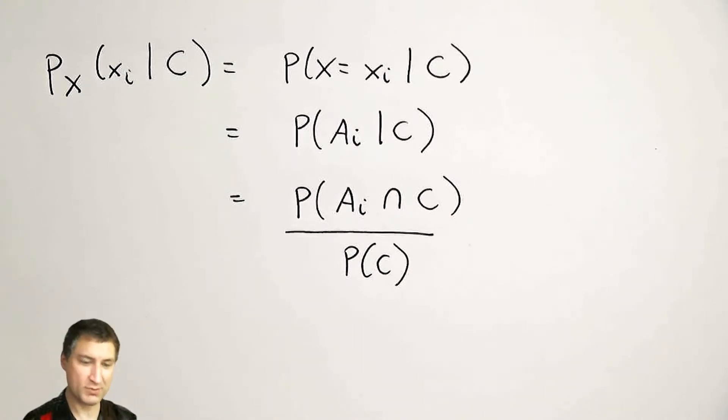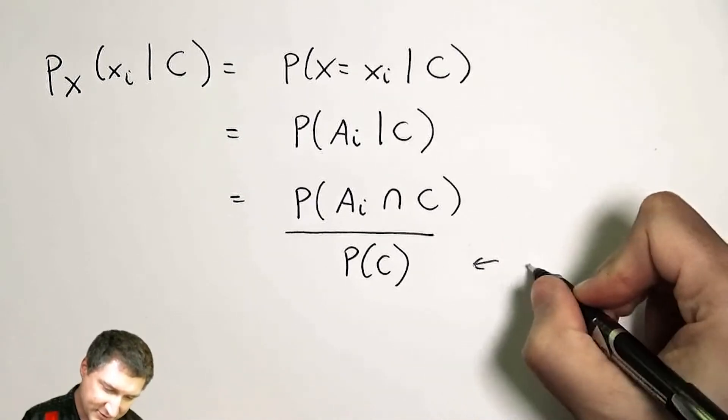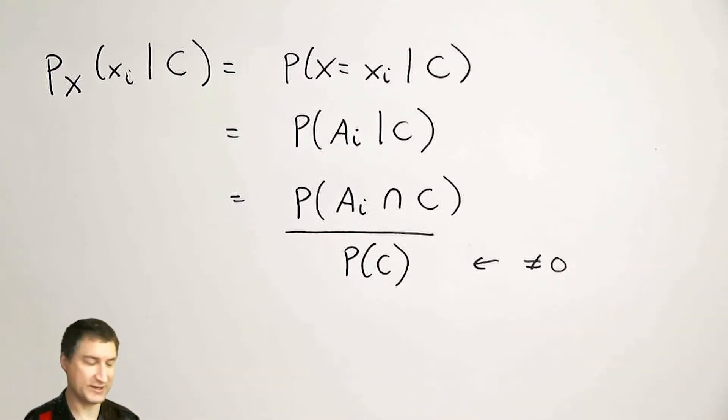Basically, this is like normalizing the probabilities of each of the subclasses with respect to this C that occurred. And of course, the probability of this conditioning event has to be not equal to zero for this to make sense.